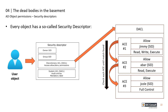The security descriptor includes the owner, who can usually read, modify, and set permissions on the object. It also includes a DACL — a discretionary access control list — that specifies permissions for users on an object. The DACL consists of multiple access control entries, or ACEs, which define the permissions users have on the object. When a permission check is performed, each ACE is checked against the user requesting access until a match is found. The last part is the SACL — the system access control list — which defines what operations on an object should be logged.